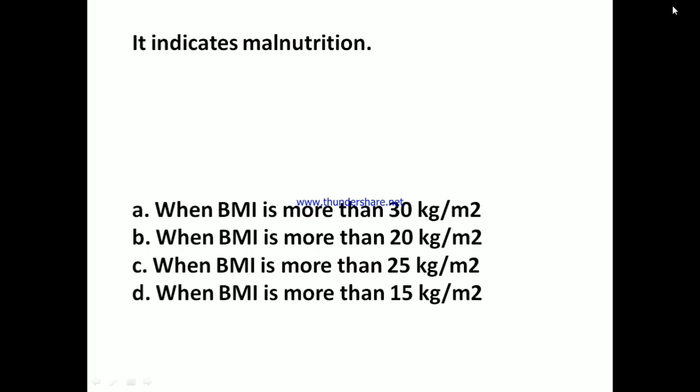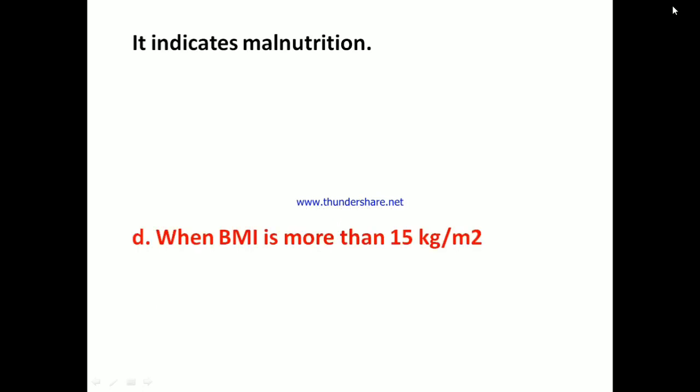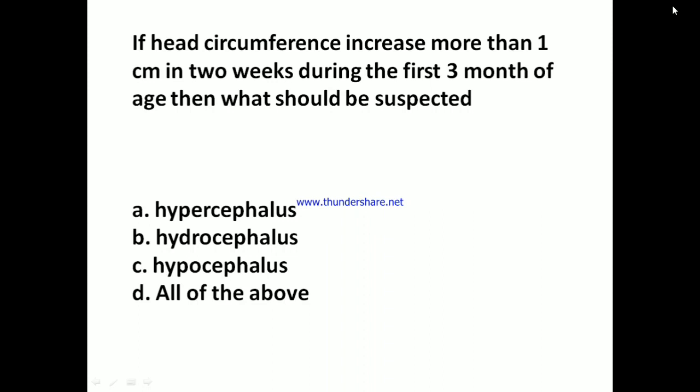Which of the following indicates malnutrition? A: when BMI is more than 30 kg/m², B: when BMI is more than 20 kg/m², C: when BMI is more than 25 kg/m², D: when BMI is more than 15 kg/m². The answer is D: when BMI is more than 15 kg/m².